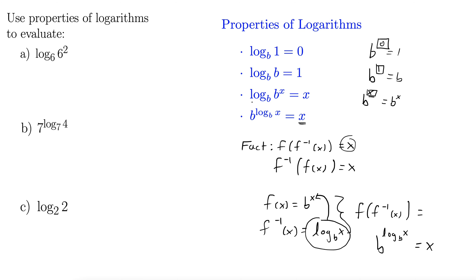And notice the same technique would have worked in the property before it. Here we have b to the x as our f of x, and log base b is f inverse of x. But when we plug in f of x into f inverse of x we always get x back. That's this property down here, and indeed we get x back for both of these. So this fact here works for both of these two properties really.